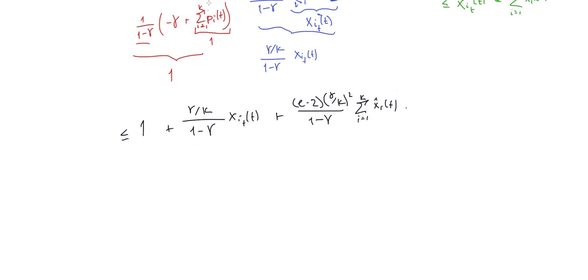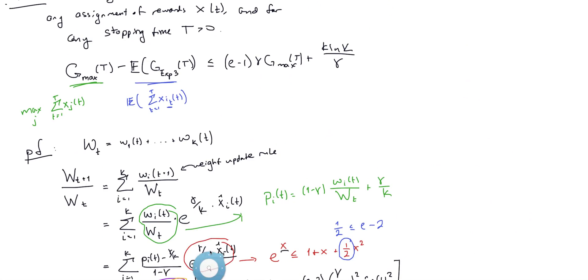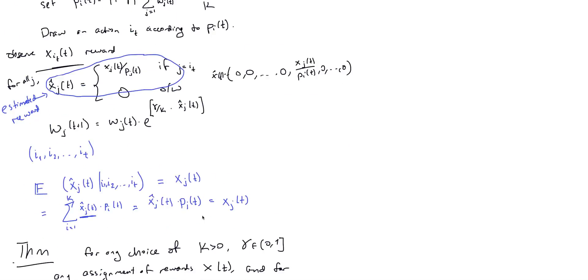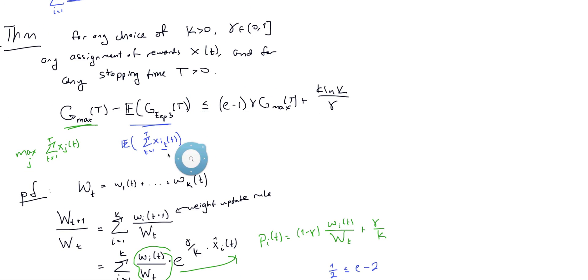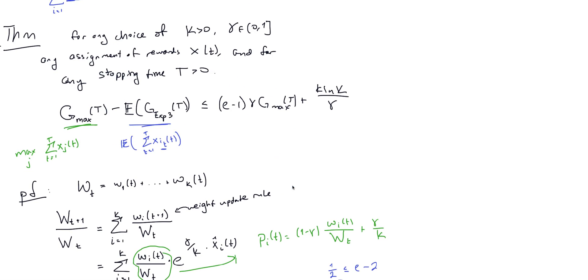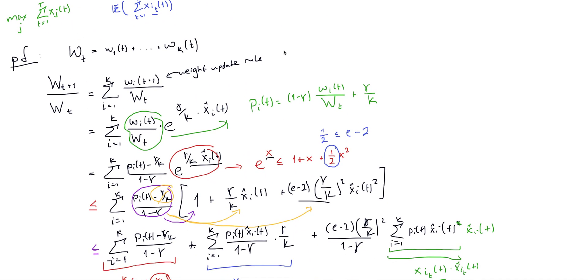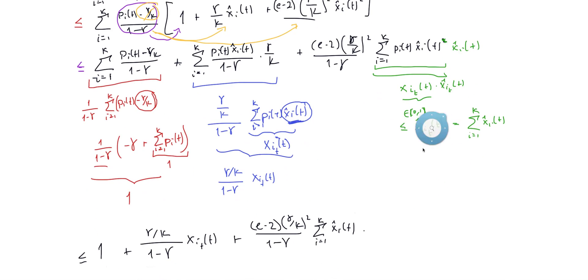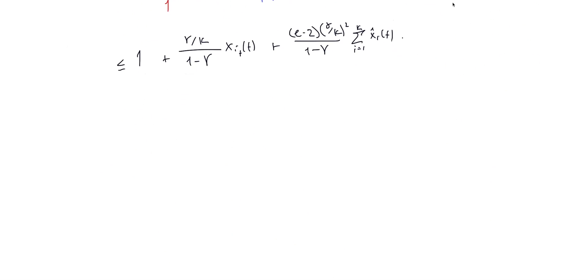Welcome back. So last time we stated what the EXP3 algorithm was, stated it and outlined it. Then we talked about what this theorem was on the upper bound on regret. We went through this proof with all the nasty notation, the fudging terms and finding good inequalities. At the end of last video, we got to capital W of t plus 1 divided by capital W of t is less than or equal to all this stuff.